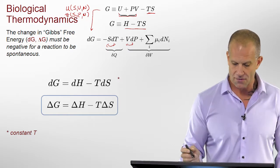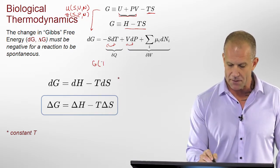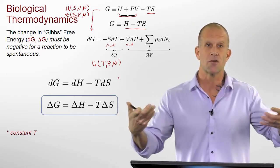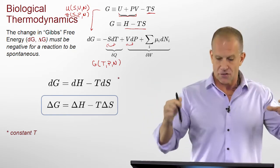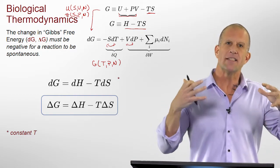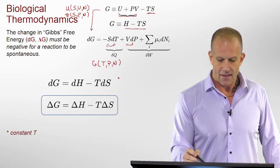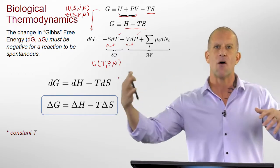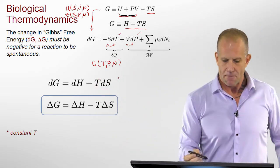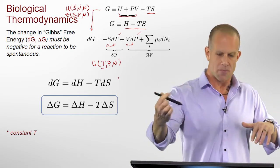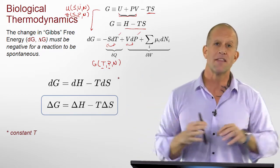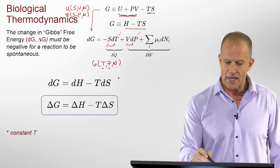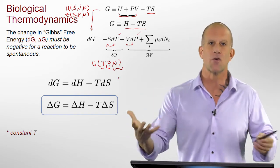Gibbs free energy is very commonly used in chemistry, biochemistry, and biological processes because for any type of reaction or chemical work term, the easiest thing to hold constant practically is pressure and temperature. It's not easy to hold entropy and volume constant, but it is much easier to work under isothermal and isobaric conditions. In fact, that's what we often do in most biological systems — they're done at more or less the same temperature and at atmospheric pressure — and then we look at how the energy just depends on the chemical work term.